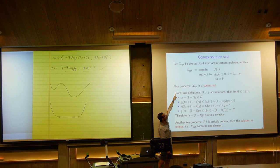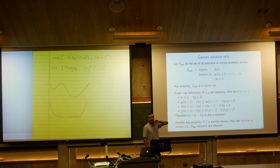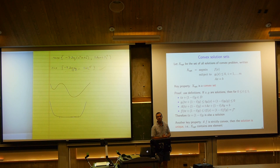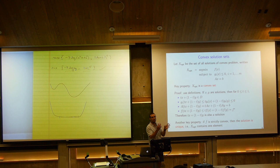Another key property: if the criterion f is strictly convex, the solution set is a singleton — the solution is unique. If I minimize a strictly convex function subject to any constraints of this form, the solution is unique. When x-opt has one element, we just write the solution directly as the argmin rather than treating it as a set.